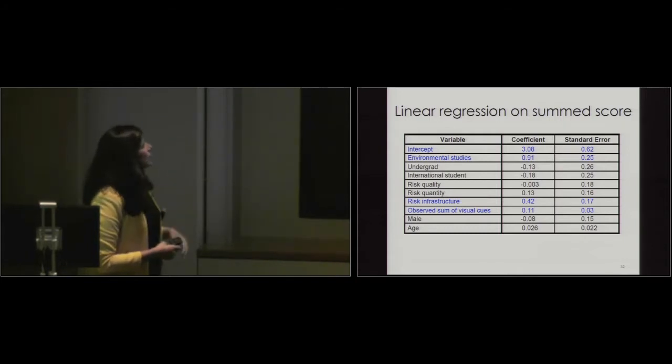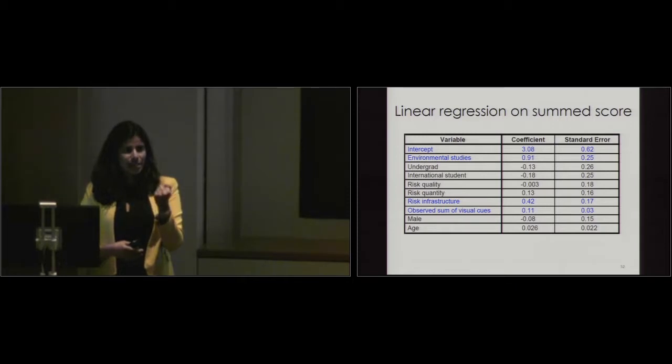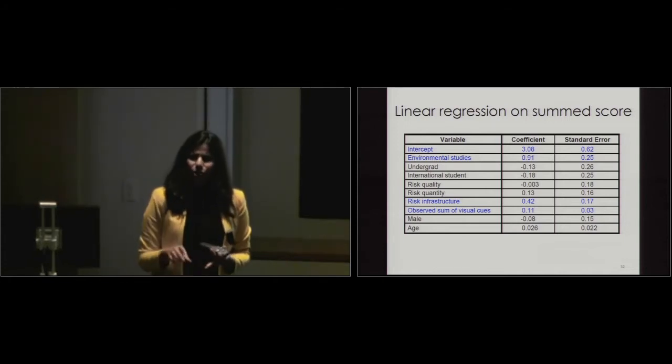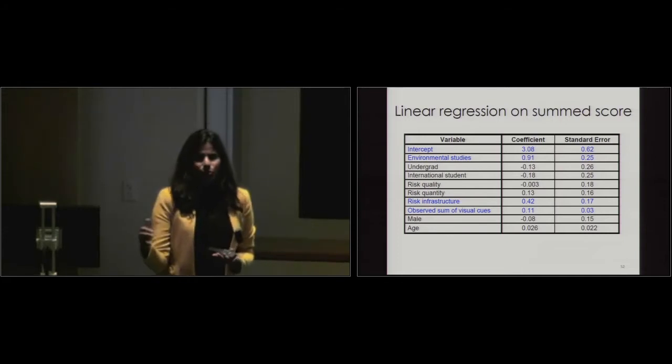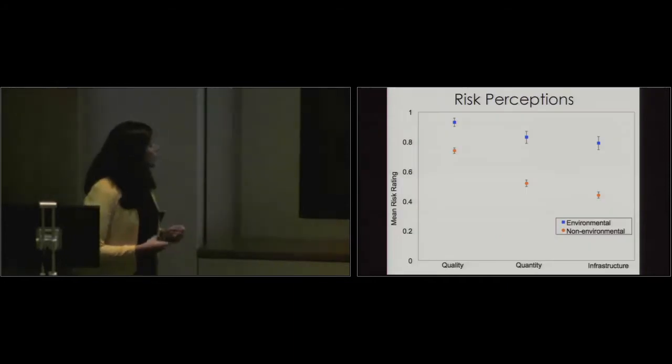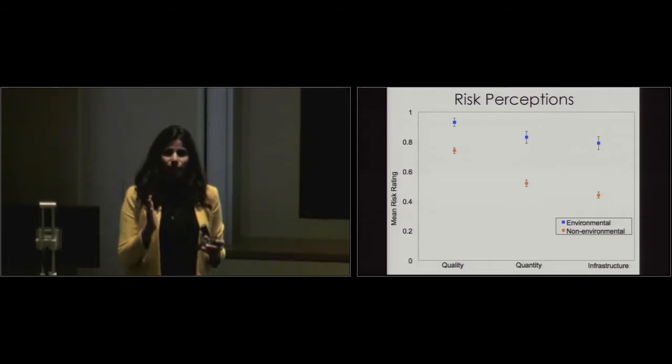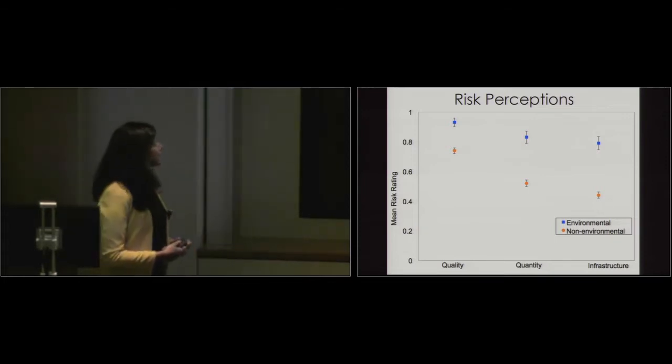And here are the very simple linear regression on the sum score. So every participant, every student had a sum score of what they received. And these are the factors that were important in predicting a high value for their score. So if you were an environmental student, you had a higher sum score. If you believed that there was a risk to infrastructure, you had a higher sum score. And then finally, if you saw lots of visual cues in the environment, like, you know, you've actually seen a water tower, you've actually seen a reservoir, you've actually seen a water meter, so on and so forth. You had a higher sum score. Okay? So what was really interesting as well is that we looked, we just asked a very simple question about do you think that there are risks related to water quality, water quantity, and water infrastructure? And this was a very simple yes, no. There are risks or there are no risks. And this is what we find. Is that for environmental students, they believe that there are lots of risks related to both water quality, quantity, and infrastructure. But for non-environmental students, it really drops off. Is that, yeah, if I'm drinking it, yes, you know, I believe that there could be risks to it because water quality risks are high. But the lowest is water infrastructure.